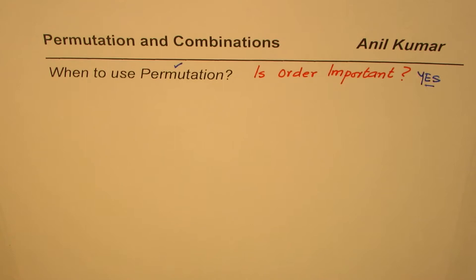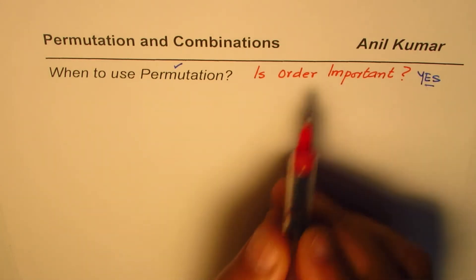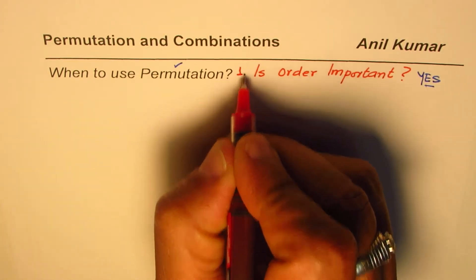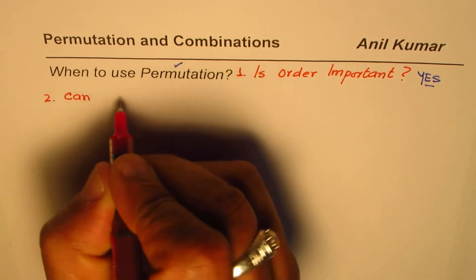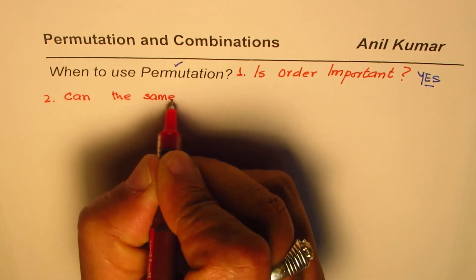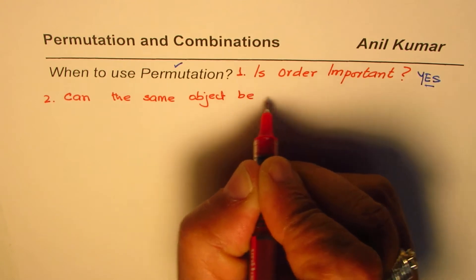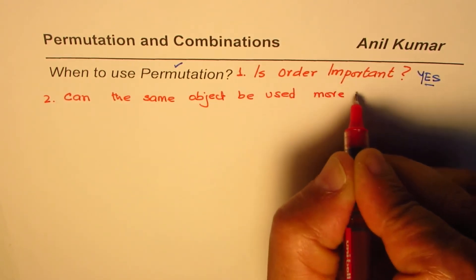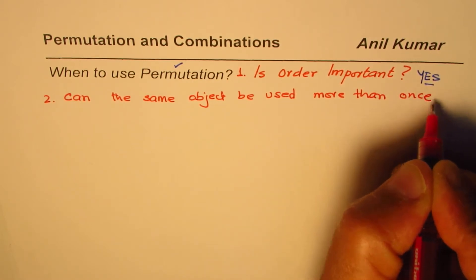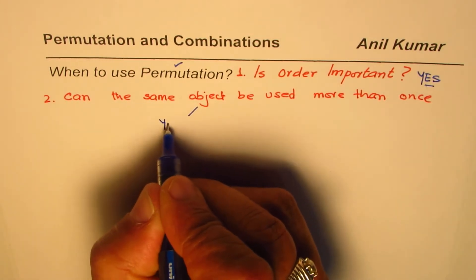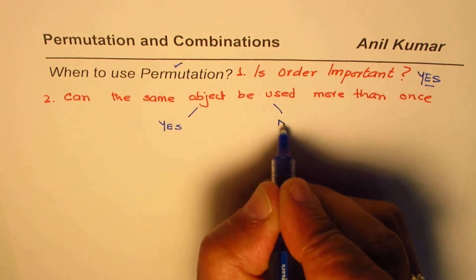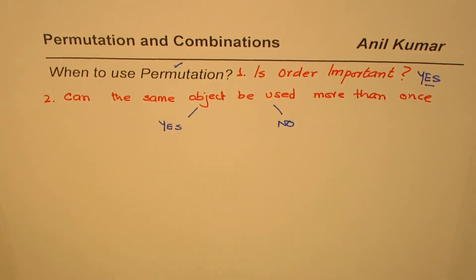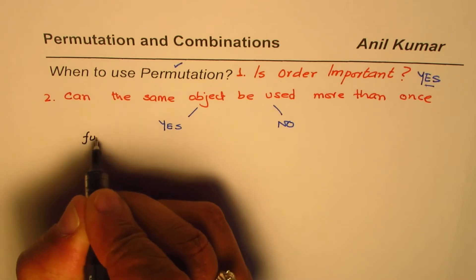Now the next question you should be asking is: can the same object be selected more than once? We have decided we are using permutation, and now the second question is: can the same object be used more than once? The answer could be yes or no. If the answer is yes, we use the fundamental counting principle.